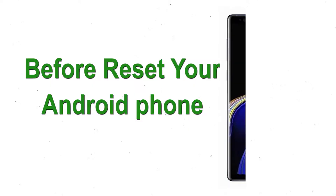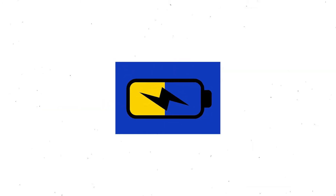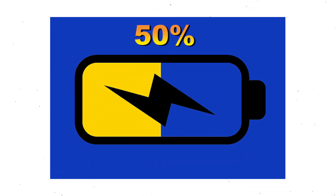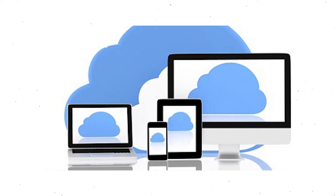Before resetting your Android phone, keep your mobile safe. Make sure the battery is properly charged before resetting your mobile — if less than 50%, charge your mobile. You need to make sure that the data on your device is backed up so you do not lose valuable photos or documents.